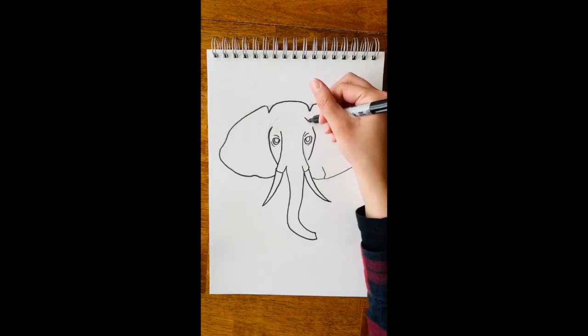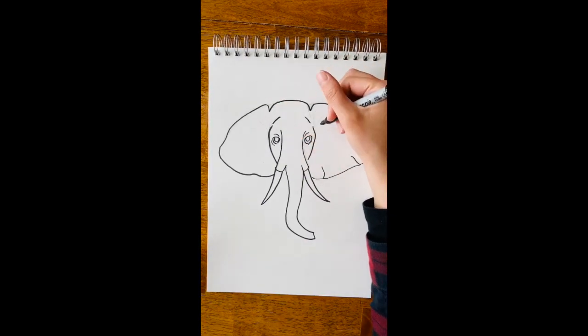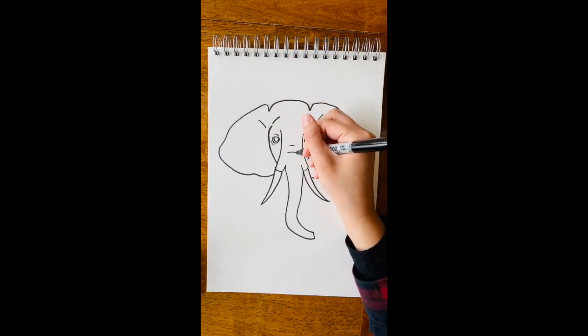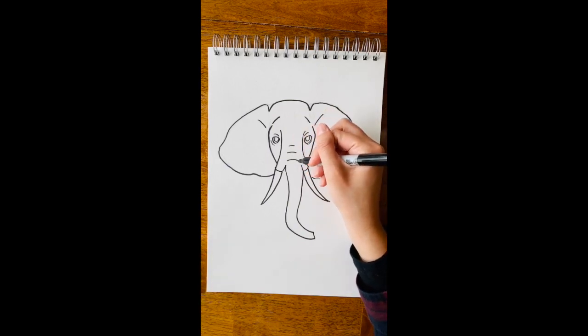And then I'm just going to add some lines on the head just to give it some more form and on the ears. And then I'm going to have some of these curved lines on the trunk.